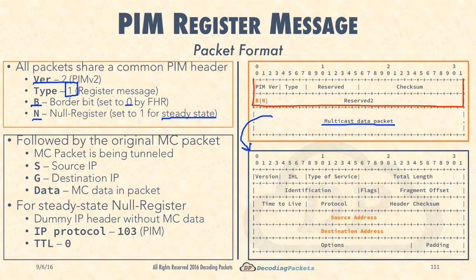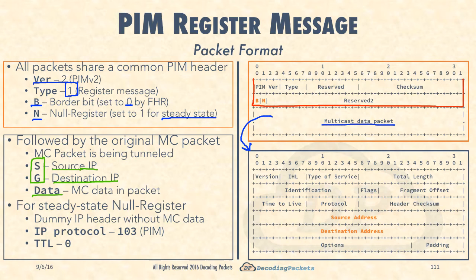The most important information is the S comma G, which is contained in the source IP and destination IP fields of the encapsulated packet. So in one fell swoop, you not only got the data received by the FHR transported to the RP, you also got the most important information — the S comma G. Once the RP processes this packet, it has information about the S comma G. The optimization part is it now also has that actual multicast data that traveled from the FHR to the RP without using multicast.